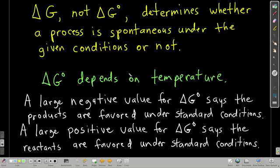Now, under most conditions, most conditions are not standard conditions. That's kind of a rare situation. It's not delta G zero, but rather delta G that determines whether a process is spontaneous or not. And most of the time, those are different.